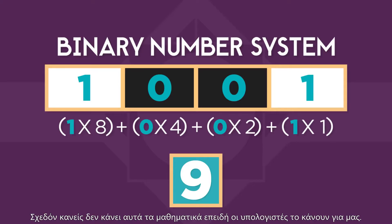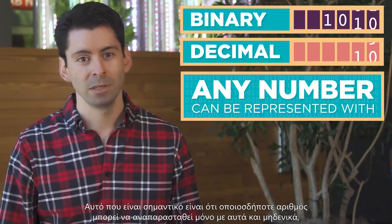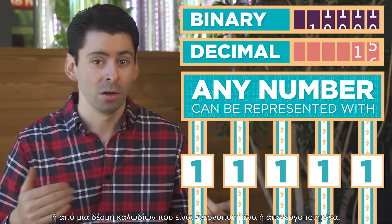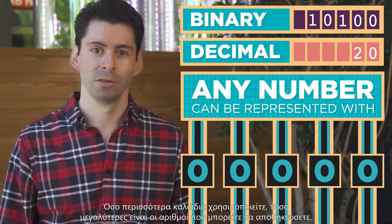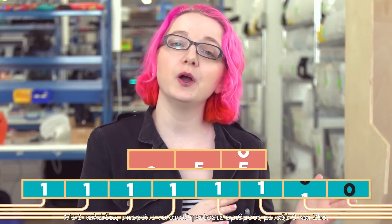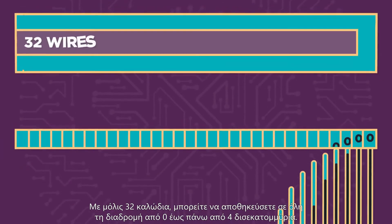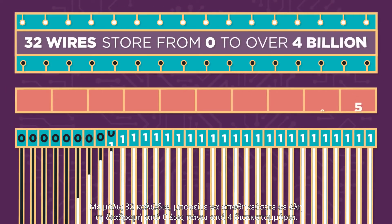To calculate the value, we add one times eight, plus zero times four, plus zero times two, plus one times one. Almost nobody does this math because computers do it for us. What's important is that any number can be represented with only ones and zeros, or by a bunch of wires that are on or off. The more wires you use, the larger the numbers you can store. With eight wires you can store numbers between zero and two hundred and fifty-five. With just thirty-two wires, you can store all the way from zero to over four billion.